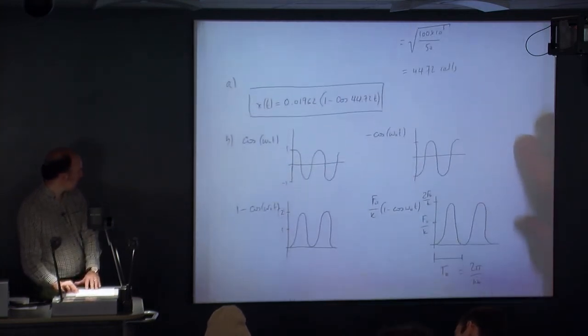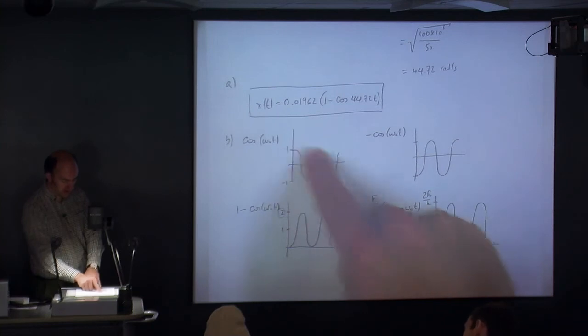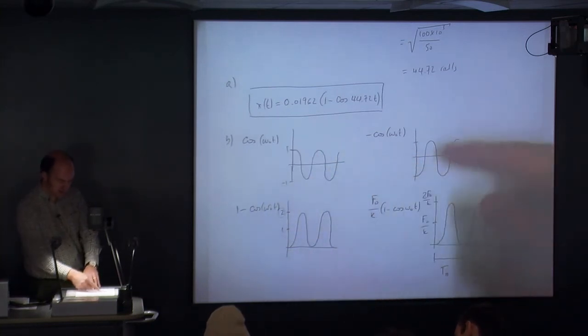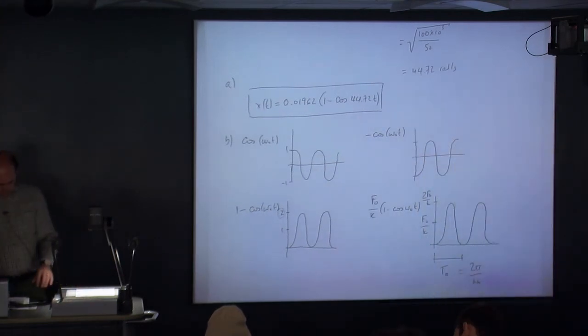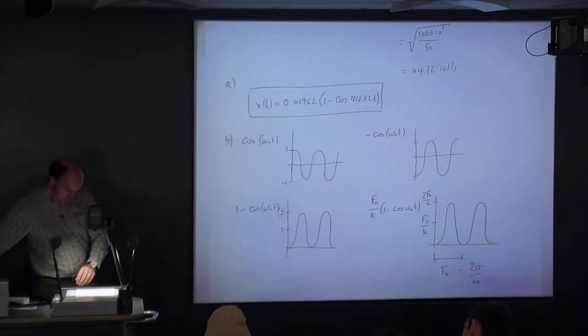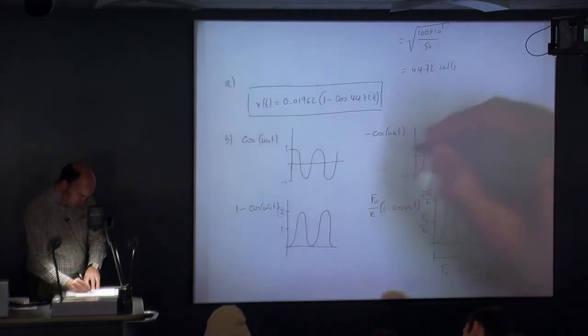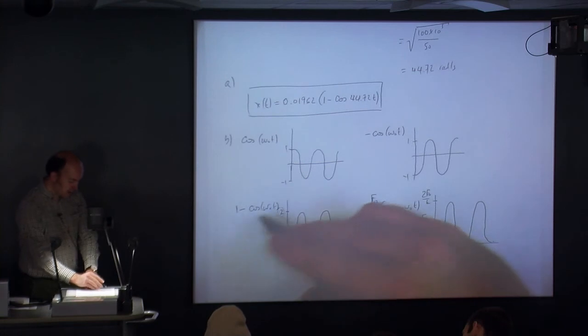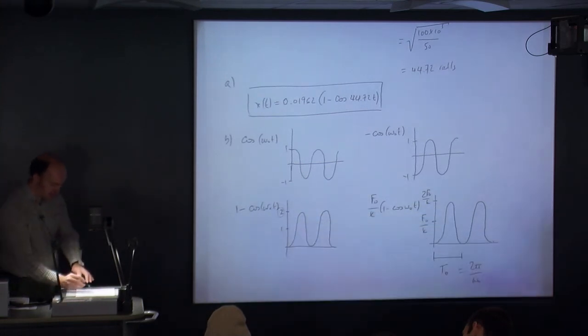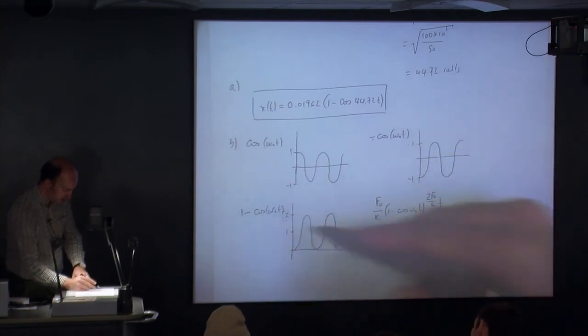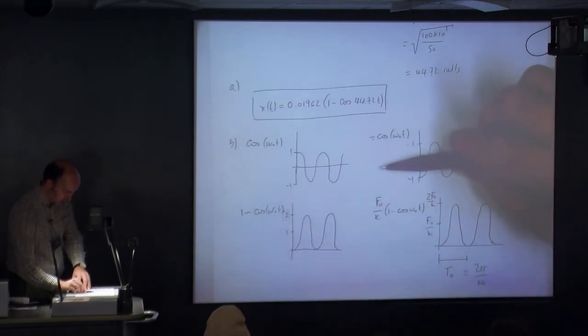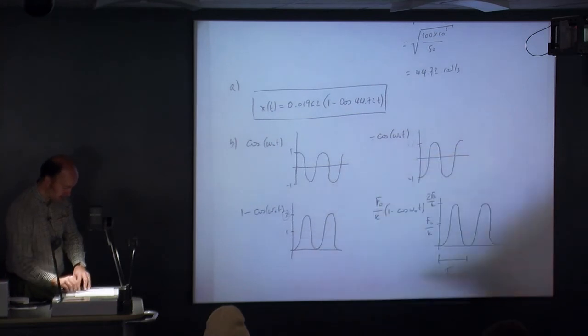Part b asks to plot it. Cosine looks like that, which is quite clear. Minus cosine is basically this plotted upside down. So we start at minus 1 instead of going to 1. If we do 1 minus cosine, well basically this is this term plus 1. So the whole lot moves up by 1. So now instead of being centred on 0, we're centred on 1.